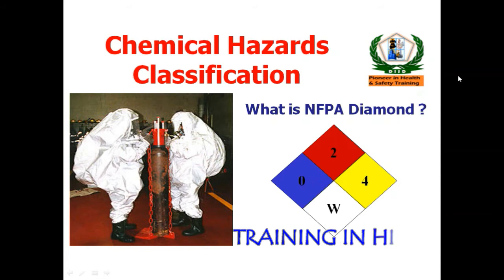Today I am presenting my new topic: chemical hazard classification and what is the NFPA diamond. We will look at how many types of chemicals there are and their associated hazards. We will also learn about the NFPA diamond — the National Fire Protection Association — a US-based agency which provides chemical hazard and safety guidelines. Let's move into the details.